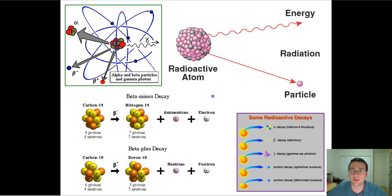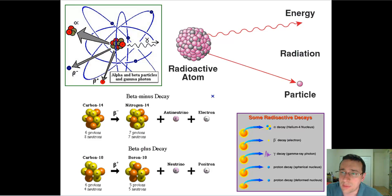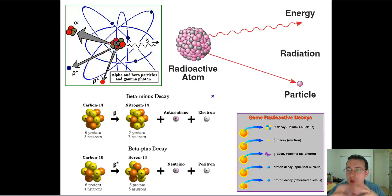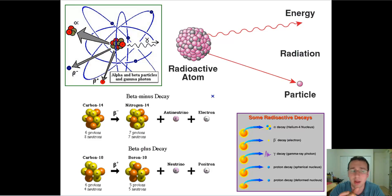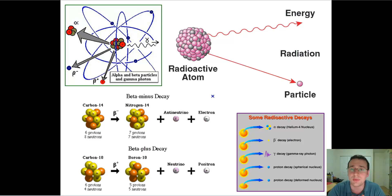There are two main kinds of decay. The first kind is what we call small decay, which is only going to happen when an atom has too many neutrons for the number of protons it has. You need basically one neutron per proton to separate the protons within the atom and create enough buffer so the positive charges don't repel each other, allowing the strong force to hold the nucleus together. But when you have way too many neutrons, you're going to end up getting decay.